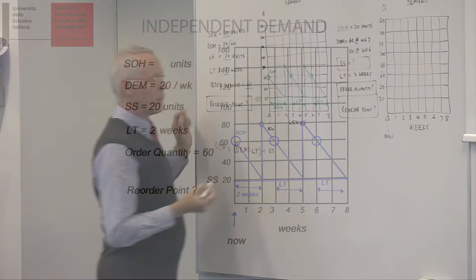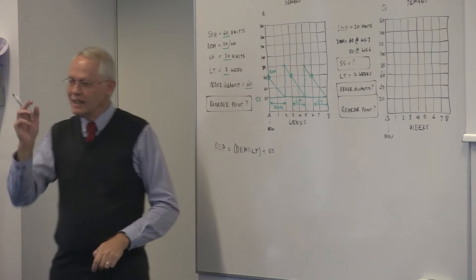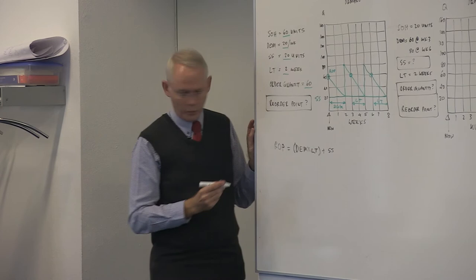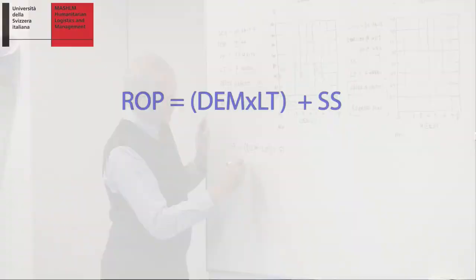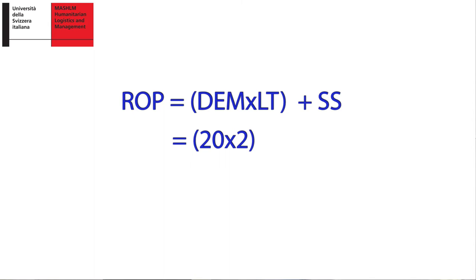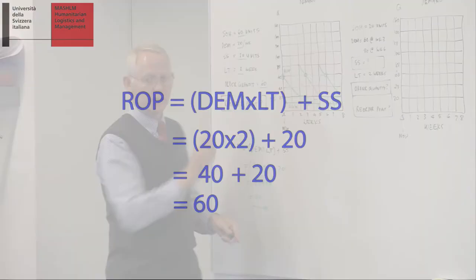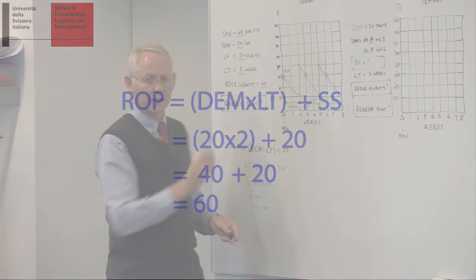Now, what's interesting in this case, I can calculate that with a little formula. My reorder point. Reorder point is demand during lead time. What's my demand? 20. What's my lead time? Two weeks. So, it's 20 times 2. What's my safety stock? 20 units. 20 times 2 is 40 plus 20. So, we can take it off. We're on 60. We've got the reorder points. There are three reorder points in the case of independent demand.